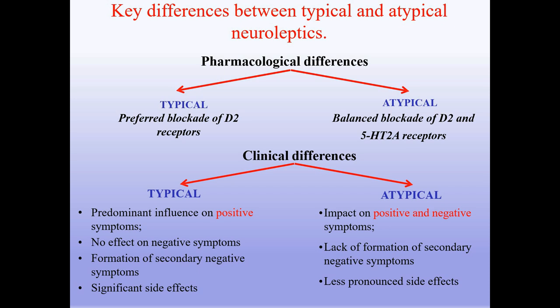Key differences between typical and atypical neuroleptics. Pharmacologically, typical neuroleptics preferentially block D2 receptors, while atypical neuroleptics provide balanced blockade of D2 and 5-HT2A receptors. Clinically, typical neuroleptics have predominant influence on positive symptoms with no effect on negative symptoms, may form secondary negative symptoms, and have significant side effects. Atypical neuroleptics impact both positive and negative symptoms, lack formation of secondary negative symptoms, and have less pronounced side effects.